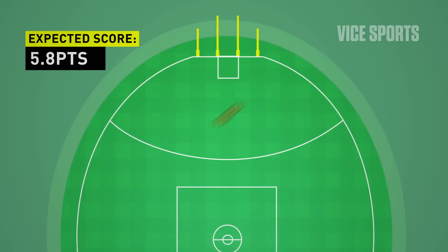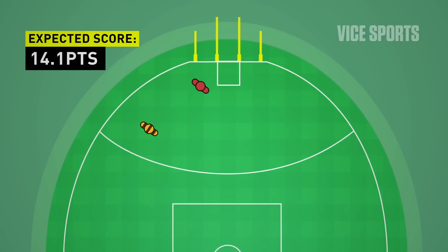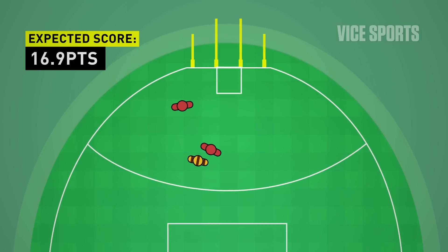What expected score gives you is the sum of your efforts. What we're adding up is all those fractions of a chance of getting the goal, and that's the better indicator of whether you should win the game or not.